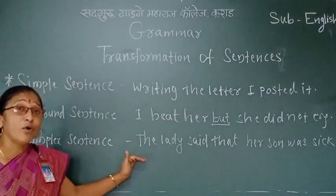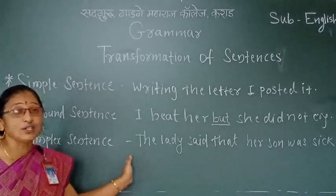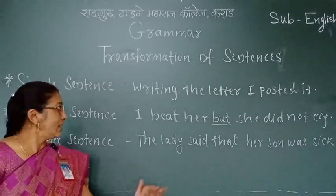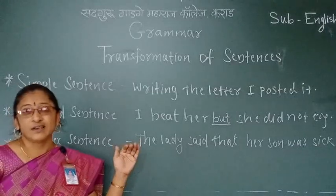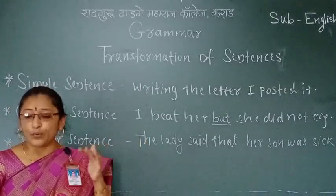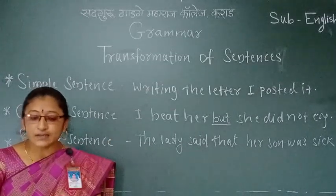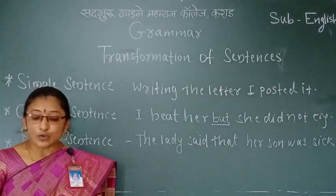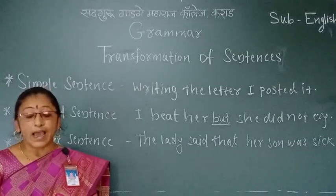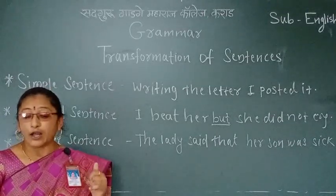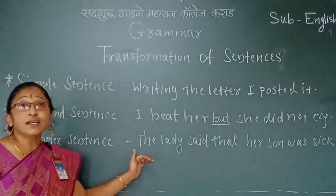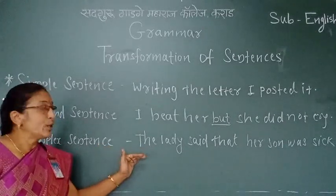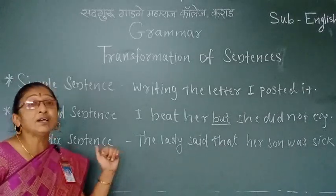With the help of subordinate conjunctions, we join the two clauses in a complex sentence. Subordinate conjunctions include: that, WH words, while, who, after, because, as, since, unless, if not, so that, in order that, even if, as soon as, no sooner, though, although, even though, etc. With the help of these subordinate conjunctions, we join the two clauses in a complex sentence.